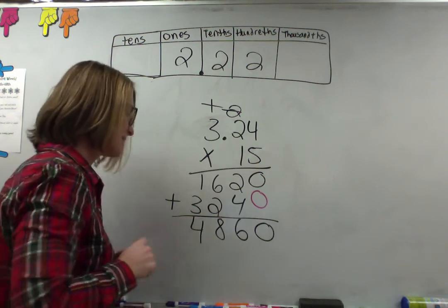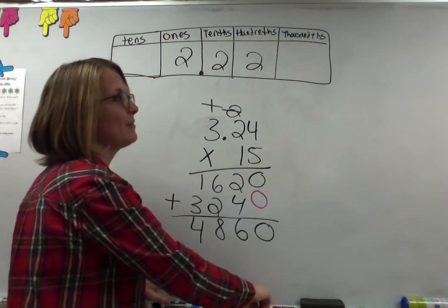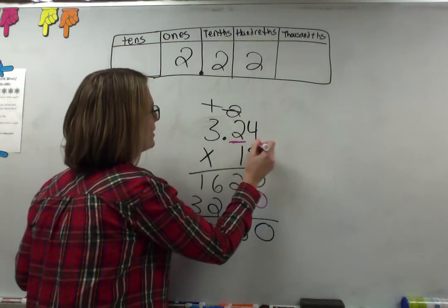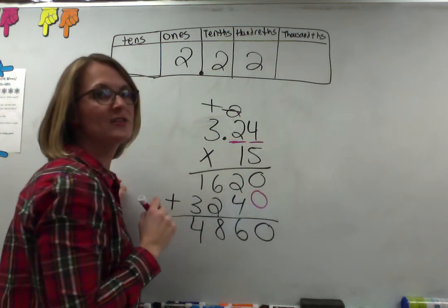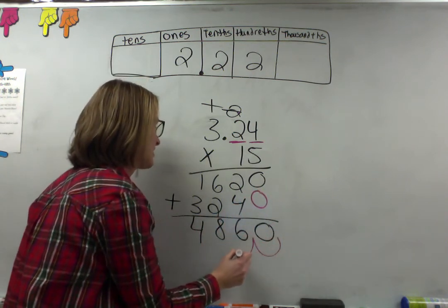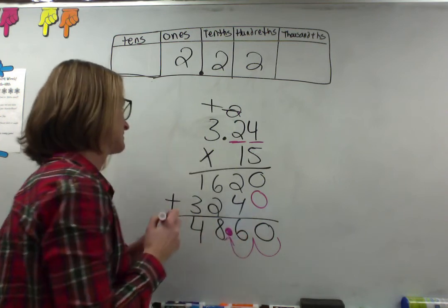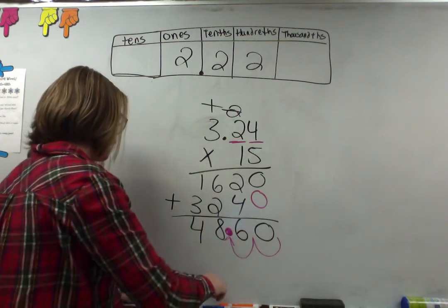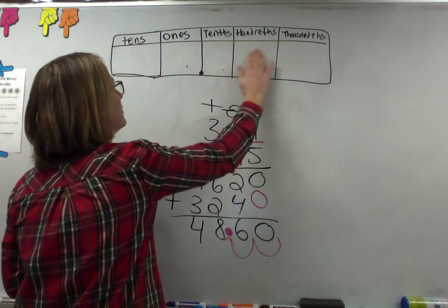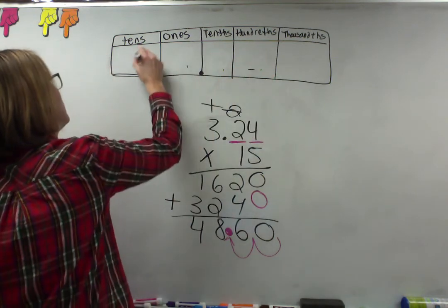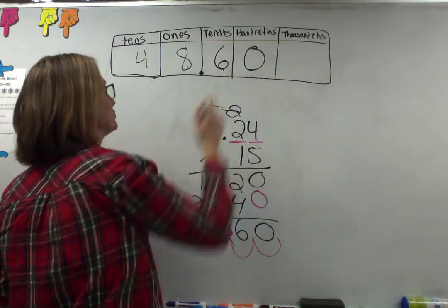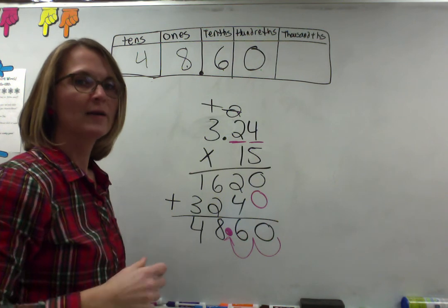Now I'm not done because there is a decimal. So remember I got to do something. I'm going to come up here and say there are two places after the decimal in the problem. So I'm going to come down to my answer and move the decimal in two places, and it's going to go between the 8 and 6. So my answer is going to be 48.60, or 48 and 60 hundredths.